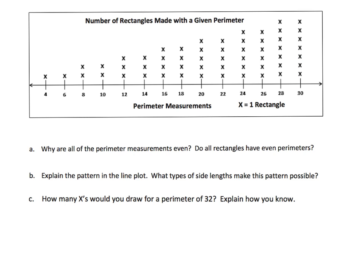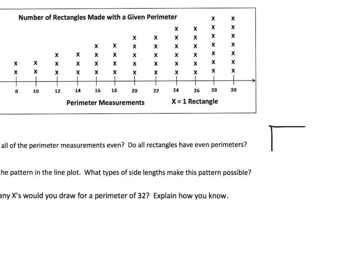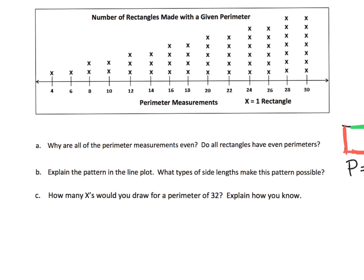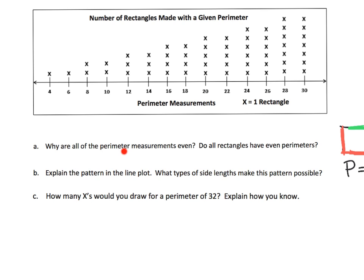So why are all the perimeters even? Well, we know that no matter what rectangle we build — and I'm going to draw it right here — whatever rectangle we try and build, we know it's going to have a length and a width, and then another length and a width. So we know that the perimeter is always going to be 2 times the length plus the width. And since it's always going to be 2 times, it means it's always going to be even. So perimeter equals 2 times the length plus the width, and that 2 times makes it even.